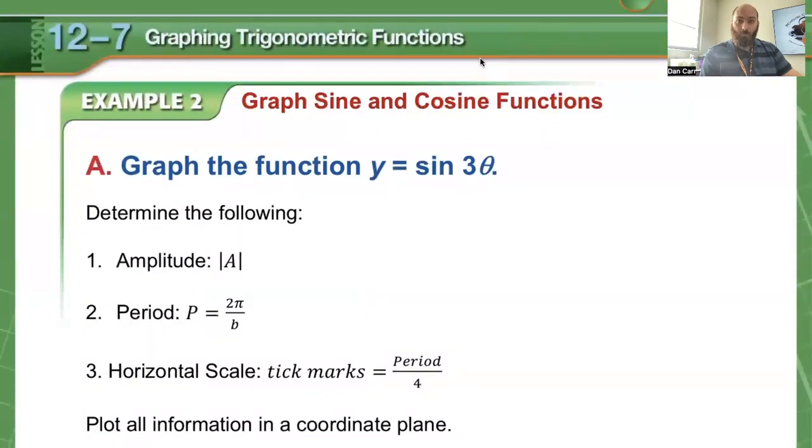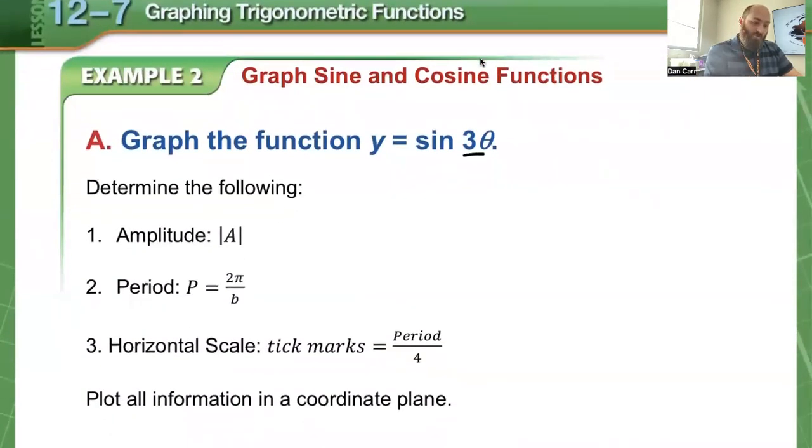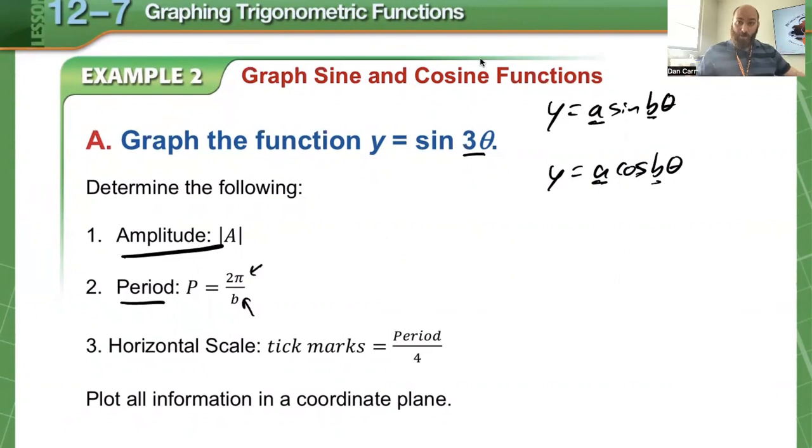Now here's how some things will change. If I have y equals sine of 3 theta, what we're changing is the period. For now, we're going to stick with these two: changing the a and b values and seeing what happens. A changes the amplitude. Because it's a distance, if it's negative, we just take the absolute value.